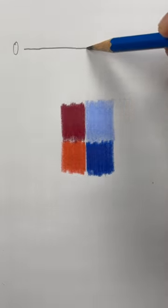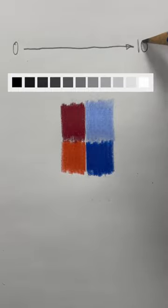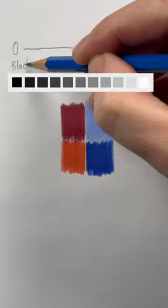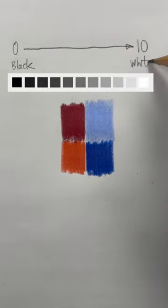And the secret is that color has three aspects to it. The second aspect is called value. Value is how light or how dark the color is on a scale from 0 to 10.